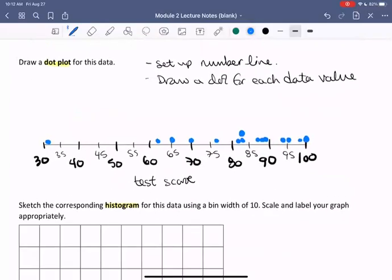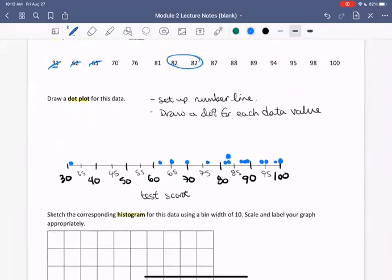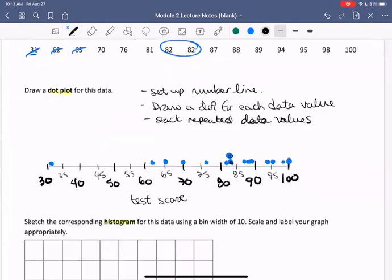All right. So your dot plot should look something like this. Notice when you have a repeated number like 82, you stack the dots on top of each other. And that's so you can get a sense of how many data values occur at that specific value. In this case, 82. So I'll just make a note of that on our steps: stack repeated data values. So one thing you'll notice when you're drawing this dot plot is that it gives you a sense of the frequency of the data values. By that, I mean how many times certain data values occur. So we see that we have that 82 happening twice because we have two dots stacked on top of each other.